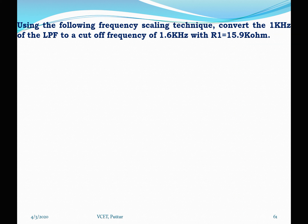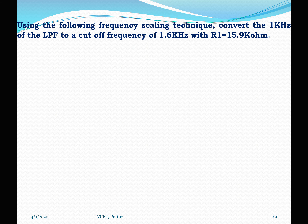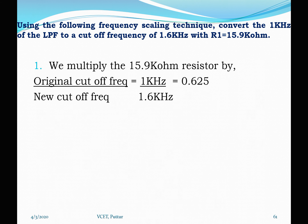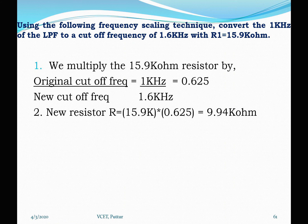The next question uses the frequency scaling technique: convert the 1 kHz cutoff frequency of the low pass filter to 1.6 kHz, given R = 15.9 kΩ. The first step is to find the ratio of original cutoff frequency divided by new cutoff frequency: 1 kHz / 1.6 kHz = 0.625. Since the resistor value is given, we multiply this ratio by the resistor value: R_new = 15.9 kΩ × 0.625 = 9.94 kΩ.